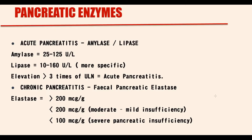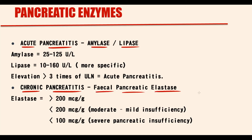Pancreatic enzymes can be divided into two major subgroups: enzymes that we use to determine acute pancreatic injury — amylase and lipase — and an enzyme that we use to determine pancreatic insufficiency that develops in chronic pancreatitis — fecal pancreatic elastase.